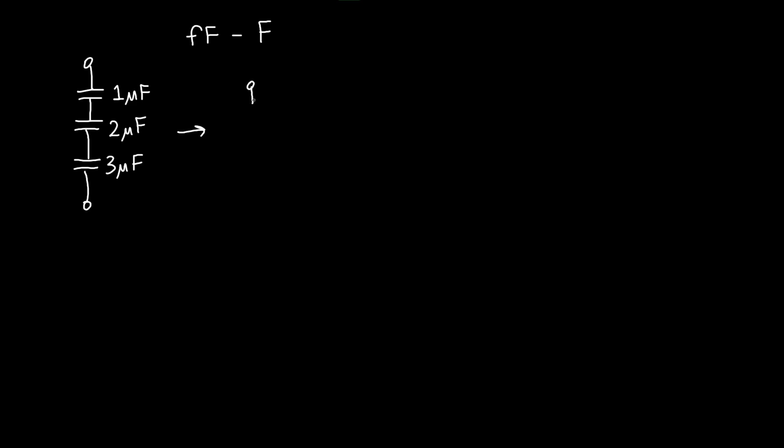So how do we convert this into a single equivalent capacitance? Well, by this time, I hope you can sing it by heart. One over our equivalent capacitance is one over C1 plus one over C2. And now we've got a third capacitor. So we've also got to add one over C3. And remember that this works for any number of capacitors. So if we had a fourth one, we could add it here and here and here and so on. And so we've got one over one microfarad plus one over two microfarads plus one over three microfarads.